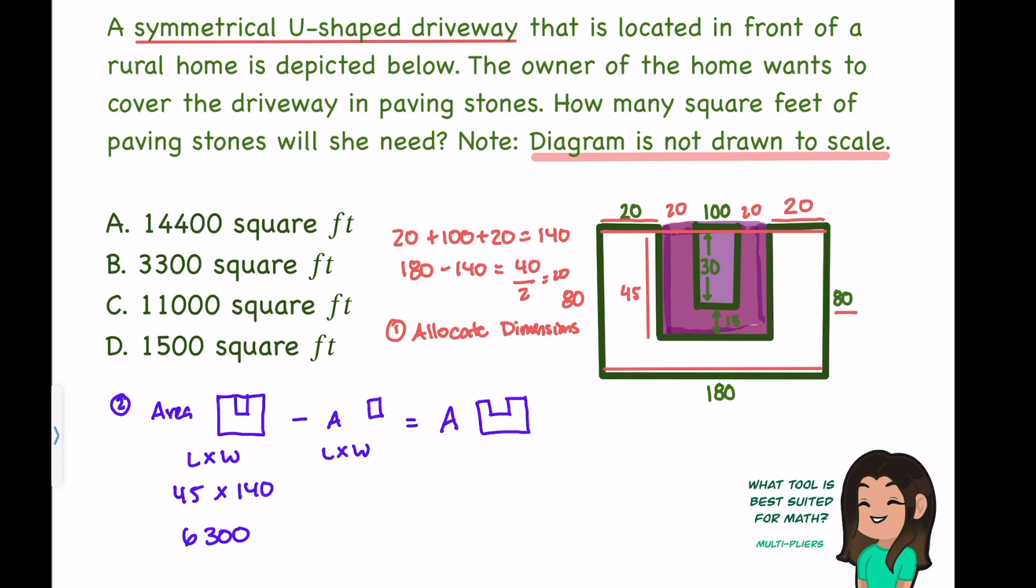I'm not done yet though. I need to take away the inside area of the inner inner rectangle. That has a length of 30 and a width of 100. So I need to take away the area of 30 times 100. 30 times 100 gives us 3,000.